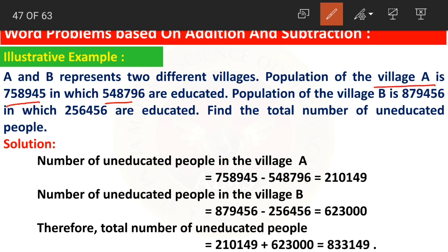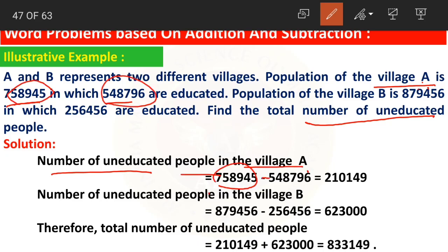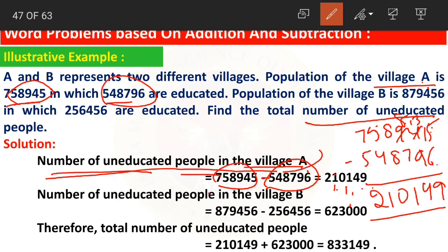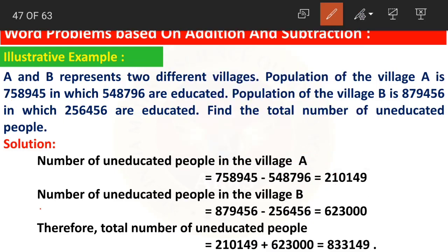For village A: uneducated people = total population minus educated people = 7,58,945 minus 5,48,796. Borrowing: 15 minus 6 is 9; borrow — 13 minus 9 is 4; 8 minus 7 is 1; 8 minus 8 is 0; 5 minus 4 is 1; 7 minus 5 is 2. So 2 lakhs 10,149 is the number of uneducated people in village A.